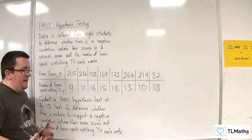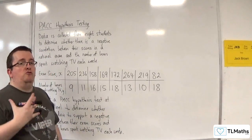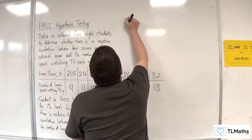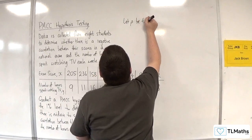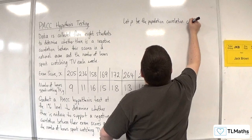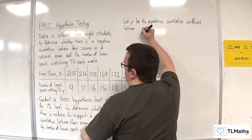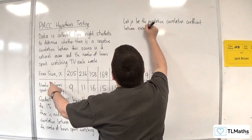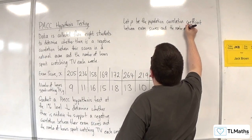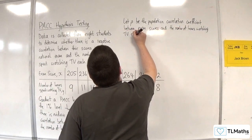So just as we did previously in the previous video, we need to start off by writing down and defining rho, the population correlation coefficient, and we need to do that in context. So let rho be the population correlation coefficient between the two variables that we've got, so between exam scores and the number of hours watching TV each week.